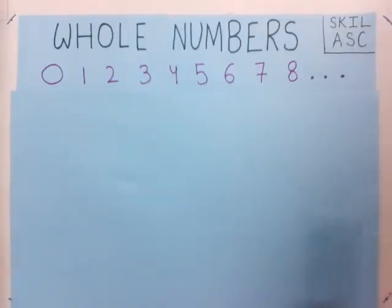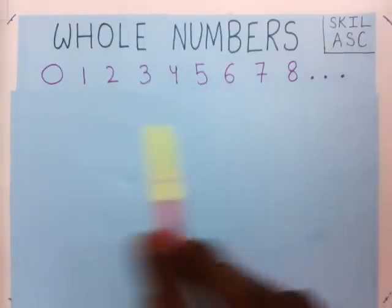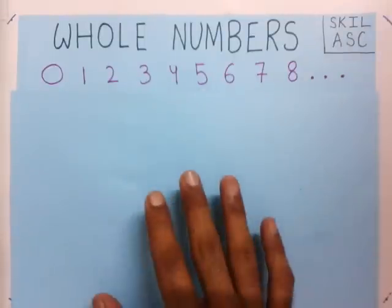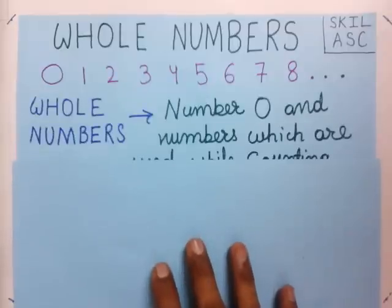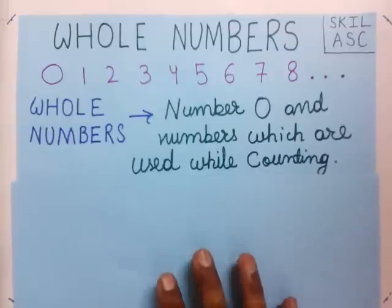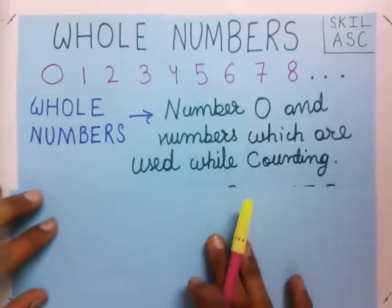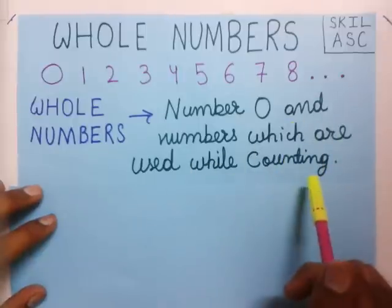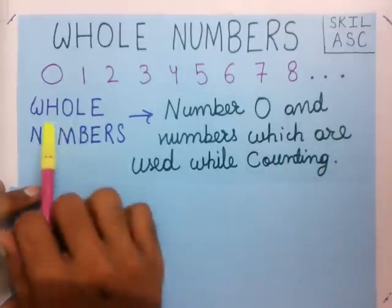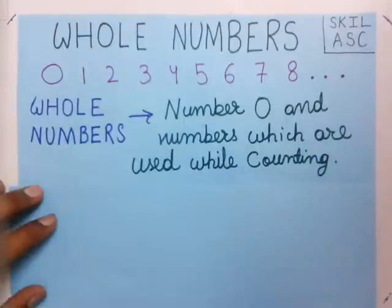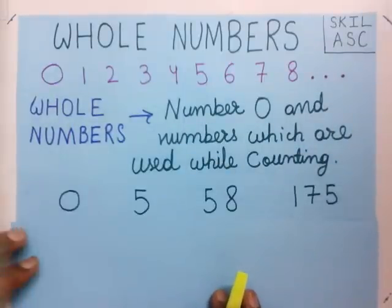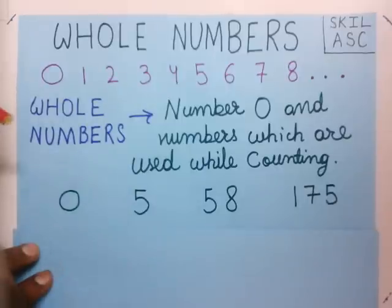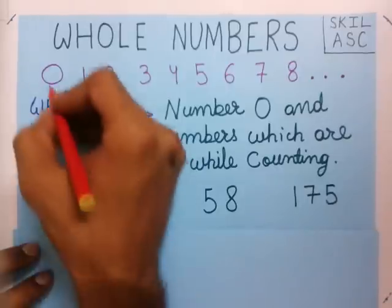These all are whole numbers. Now we can define whole numbers: the number 0 and the numbers which are used while counting are whole numbers. Now we take a few examples. Is 0 a whole number? You see, 0 is included here, so 0 is a whole number.